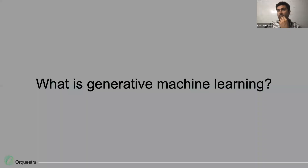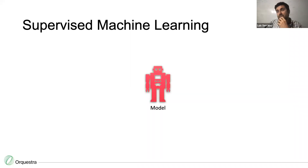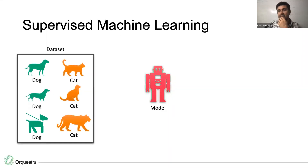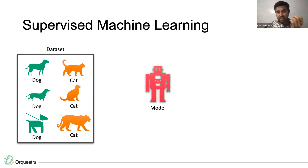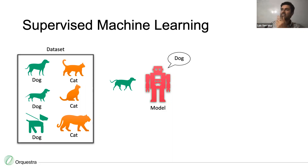Let me tell you what classical generative machine learning is. In supervised machine learning, you have a model and a labeled dataset. Every data point is an image of an animal and the label is what animal it is — a dog or a cat. The model learns that given an image without a label, it can say: based on the dataset, I think what you gave me is a dog.